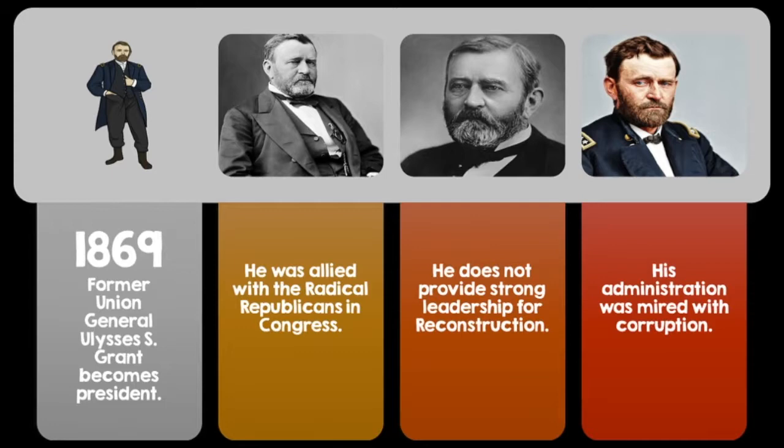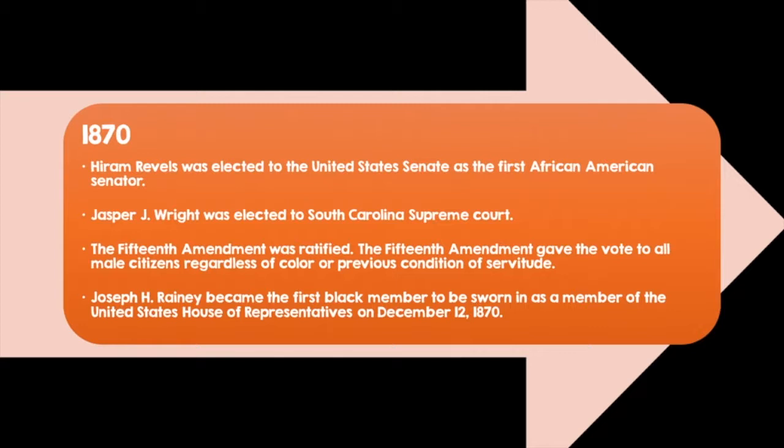In 1870, Hiram Revels, an African American, was elected to the United States Senate — the first African American senator. Jasper J. Wright was elected to the South Carolina Supreme Court as an African American. The 15th Amendment was ratified, giving the vote to male citizens regardless of color or previous condition of servitude. Joseph H. Rainey became the first African American member sworn in as a member of the United States House of Representatives on December 12, 1870.